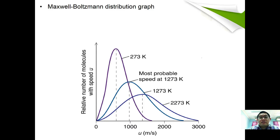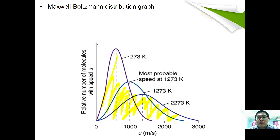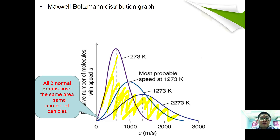This is the Maxwell-Boltzmann distribution graph, shown at three different temperatures. All curves have the same area, which indicates that they represent the same number of particles.